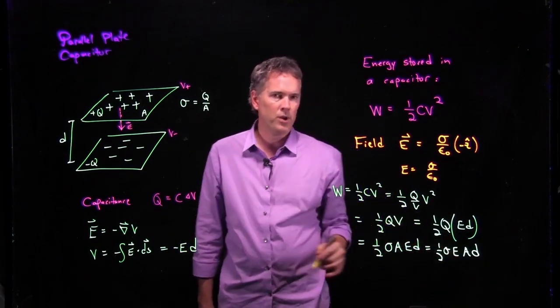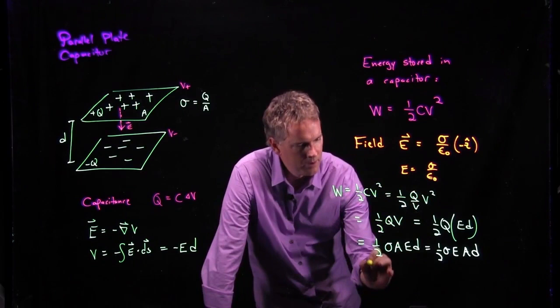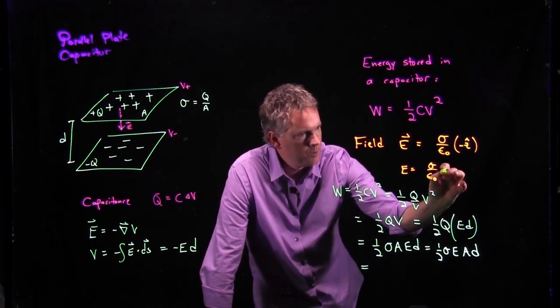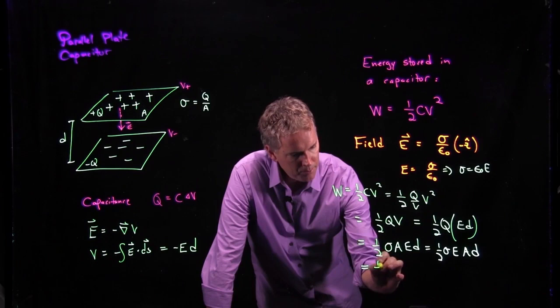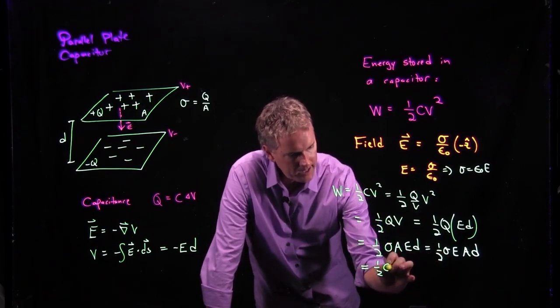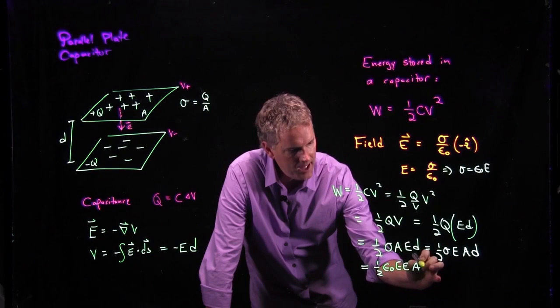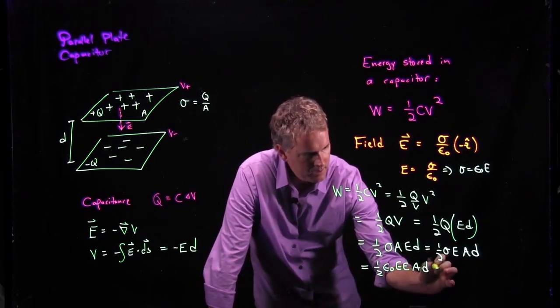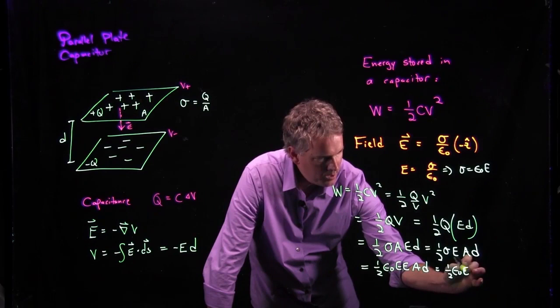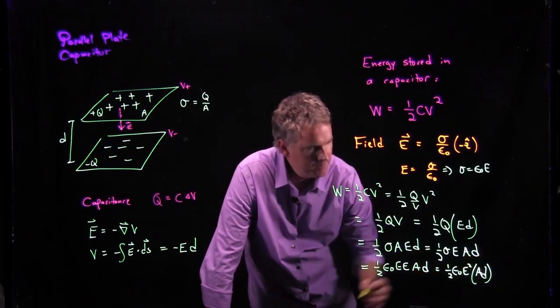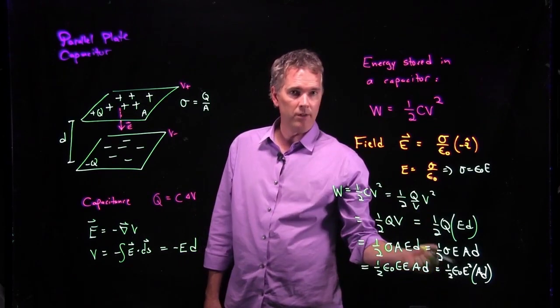And now let's put in for this guy right here, this sigma from this. If I rewrite this, I get sigma equals epsilon naught times E. So if I put in for that sigma right there, what do I get? I get epsilon naught E times E times A times D. Which is one half epsilon naught E squared times A times D. This is the energy in that capacitor now written in terms of the field.